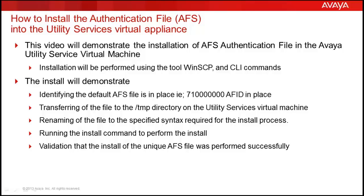Understanding the security concern, we will follow the next steps to install the unique authentication file from AFS. We will first transfer the file to the /tmp directory. It will then be renamed using standard Linux commands so it is syntactically correct for the installer tool. After that we will perform the installation and then validate the install by performing an SU to the init login and examining the AFID that has been generated.